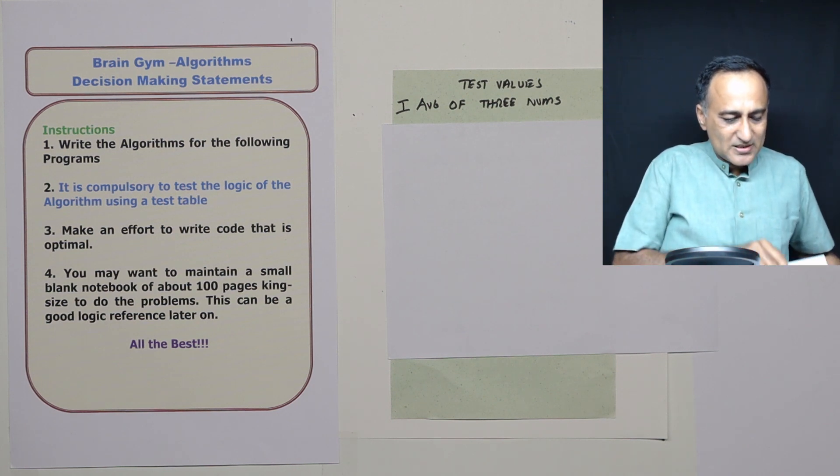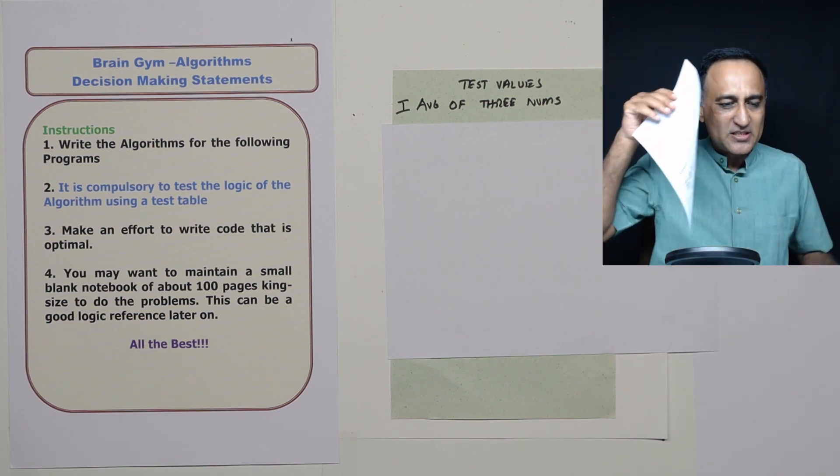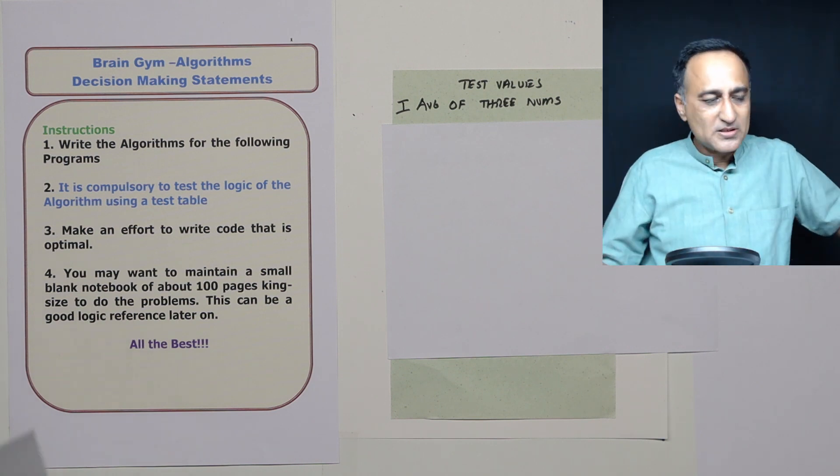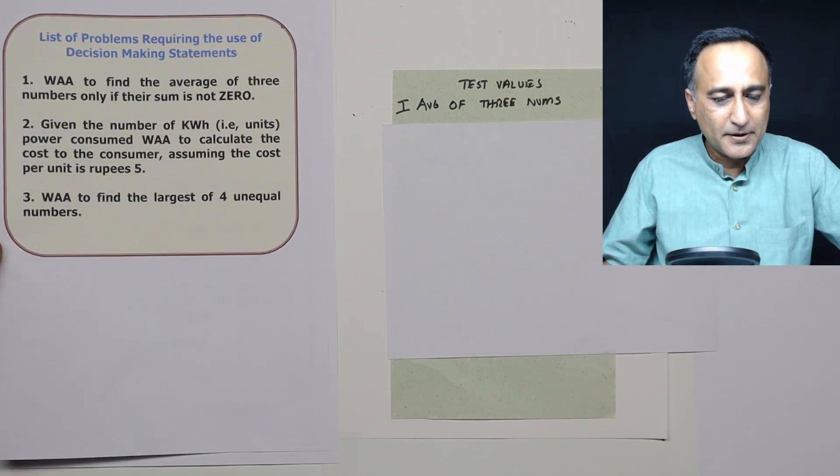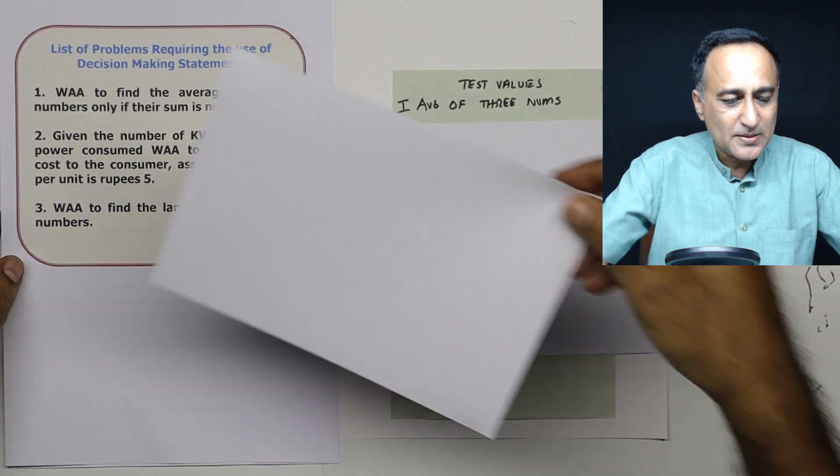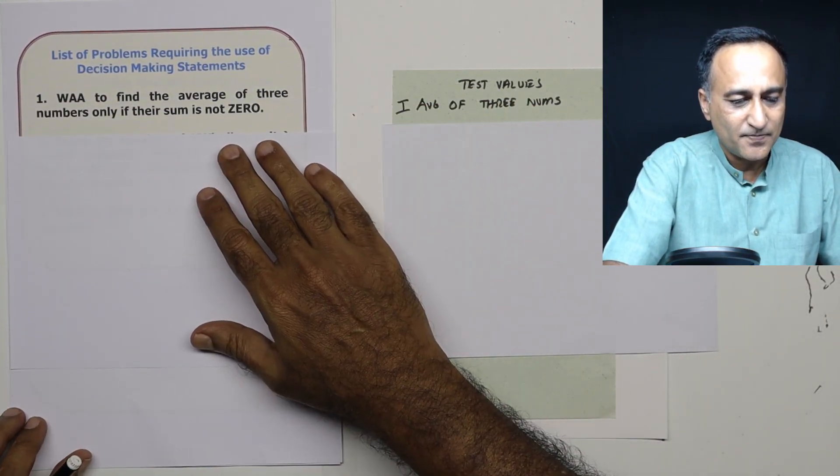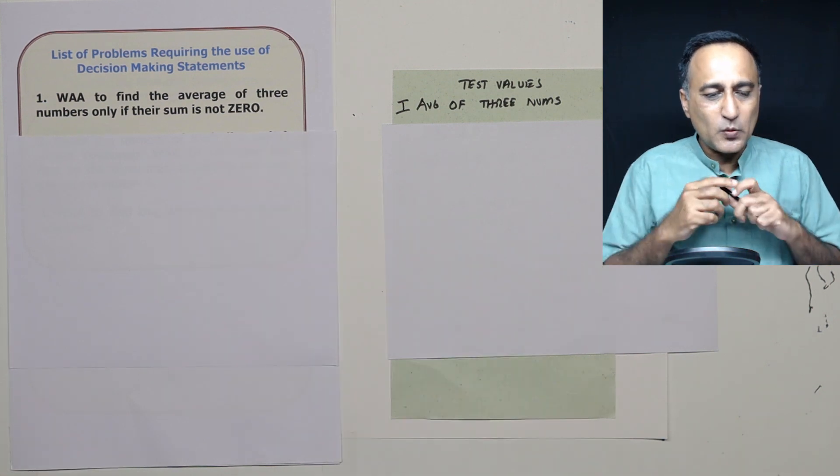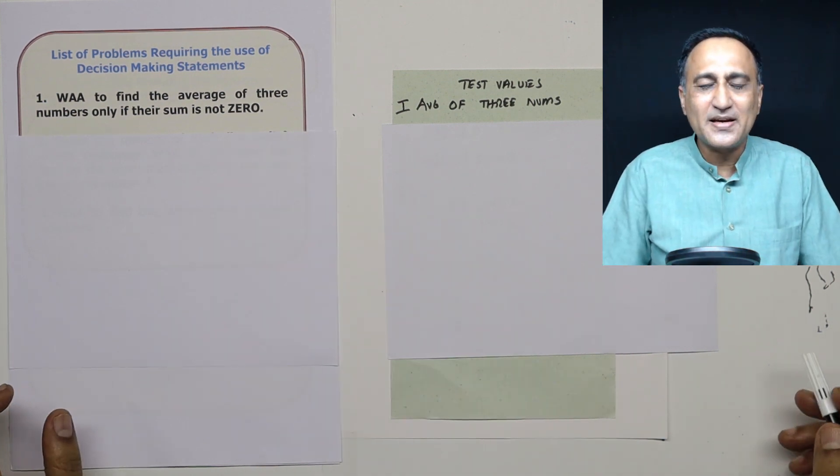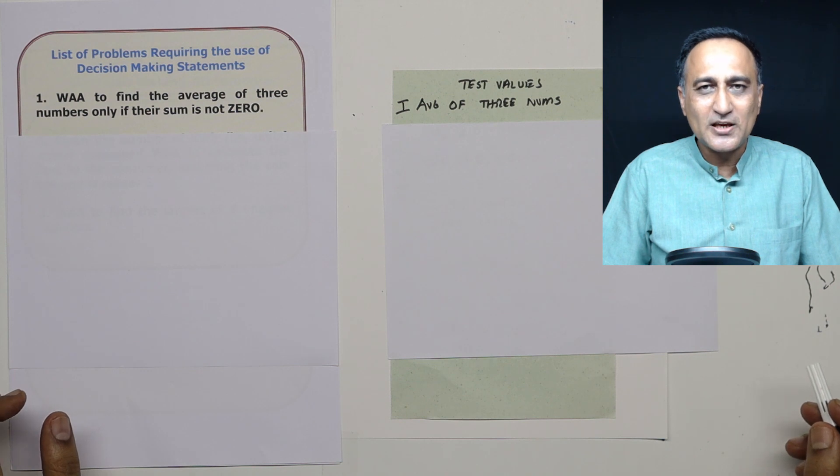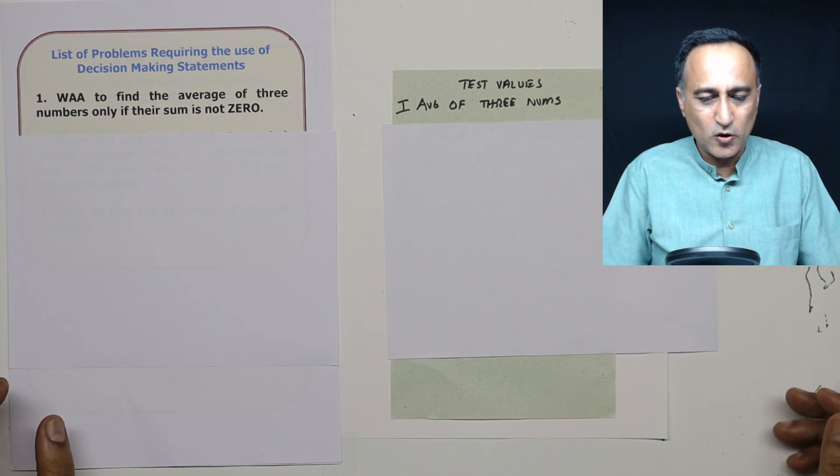Now, what we're going to do here is in this first session, I'm going to discuss about three problems I want you to attempt. So I'll discuss problem by problem so you have an idea of what is my expectation. So these three problems require the use of simple decision making statement like if or if else or if, else if, else if and so on.